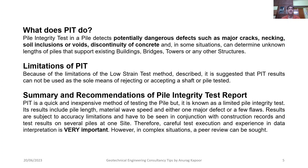The PIT method has a few limitations because it is a low strain test. It is suggested that PIT results cannot be used as the sole means of rejecting or accepting a shaft or pile tested. As a summary, PIT is a quick and inexpensive, portable method of testing pile integrity. Results include pile length, material wave speed, and either one major defect or a few flaws. Results are subject to accuracy limitations and must be seen in conjunction with construction records and test results from several piles at the same site. Careful test execution and experience in data interpretation are very important; in complex situations, peer review can be sought.